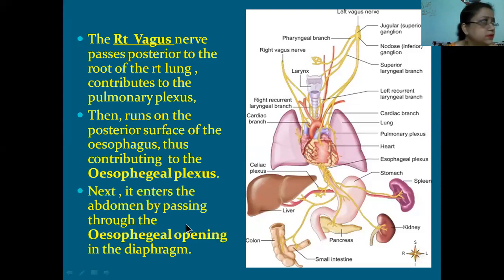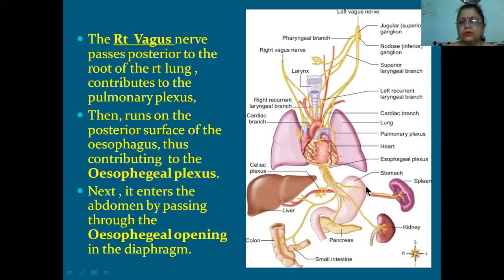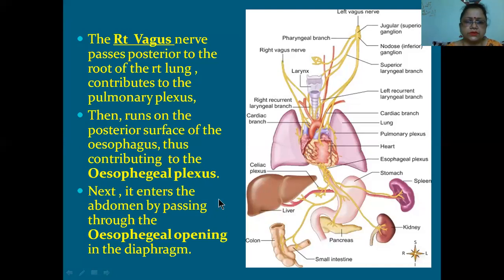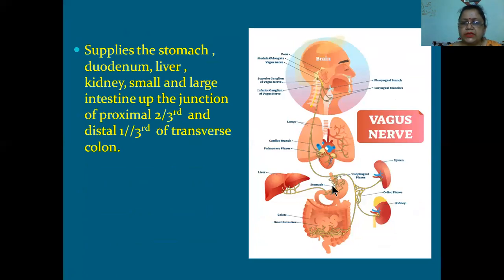The vagus enters the abdomen by passing through the esophageal opening in the diaphragm, along with the esophagus. It then supplies the stomach, duodenum, liver, kidney, small intestine, and large intestine up to the junction of the proximal two-thirds and distal one-third of the transverse colon. This wide distribution is via the celiac, superior mesenteric, and renal plexuses.